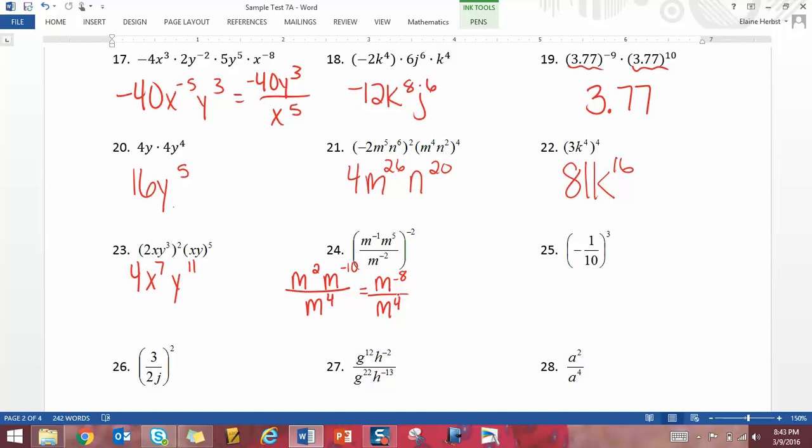Or if you just move that m to the negative eighth down to the bottom to make it a positive 8. Then in the denominator you have m to the eighth and m to the fourth. And you would add those together. So you get 1 over m to the twelfth.